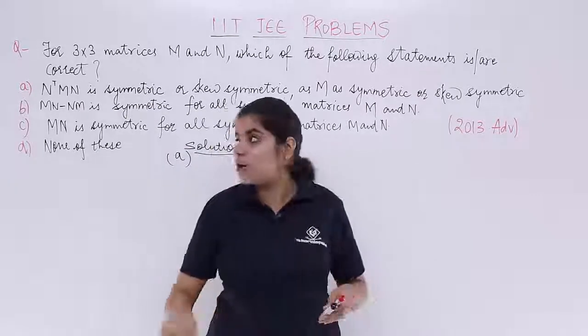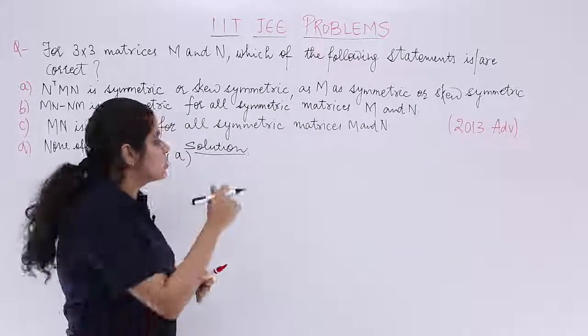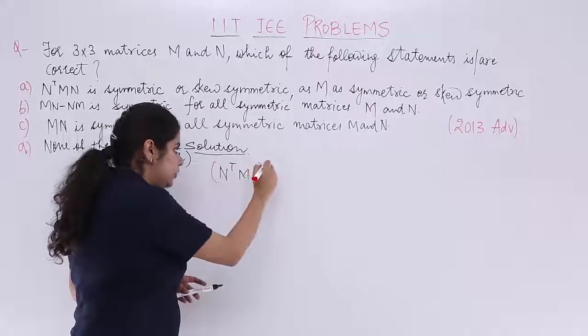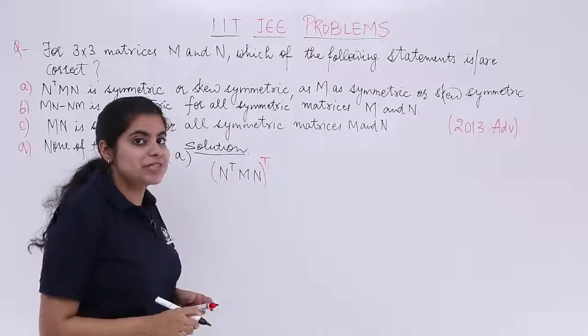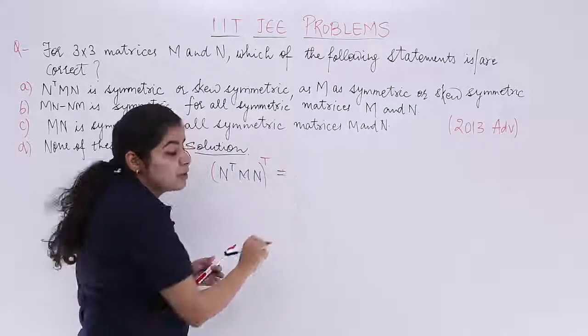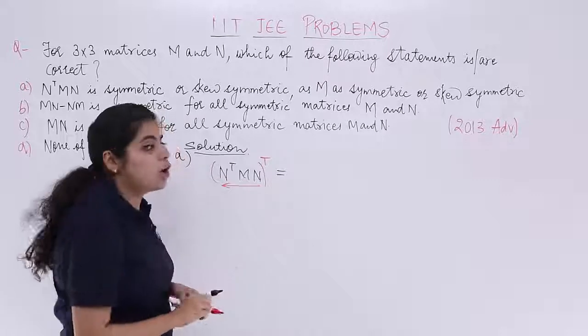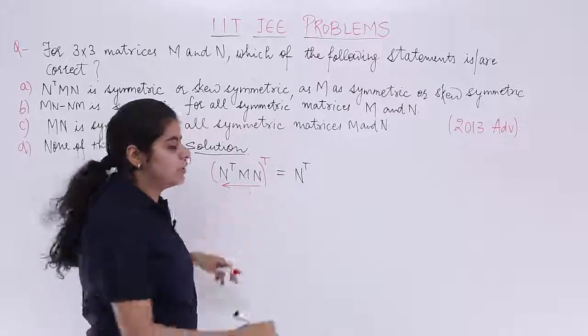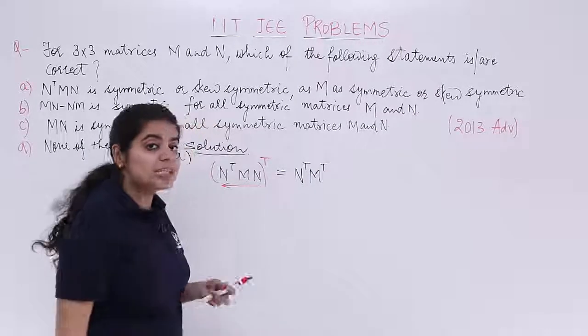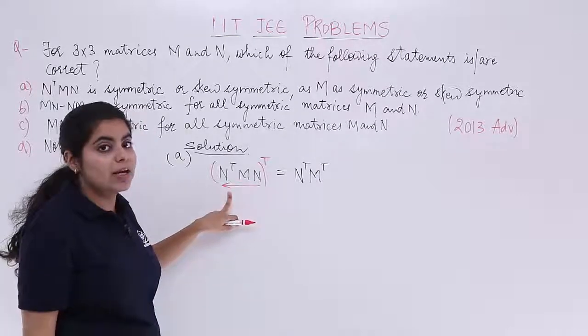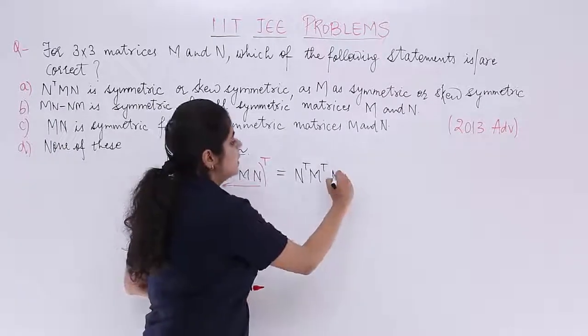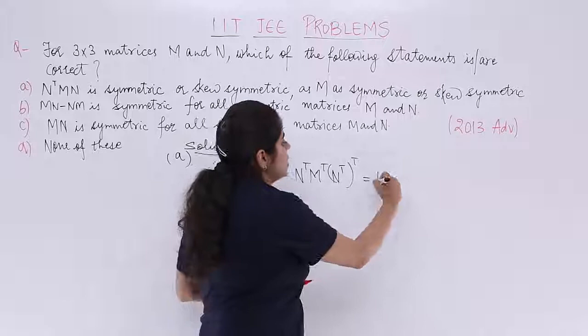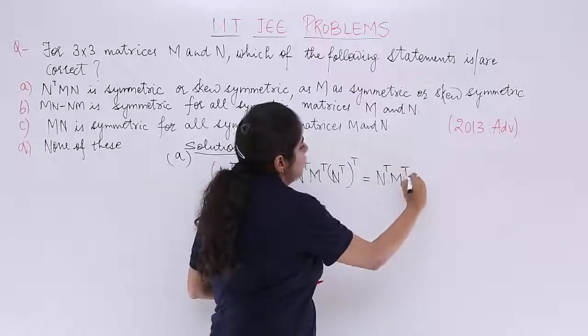Option number A consists of N transpose MN. And to check about anything, we use the concept of transpose, especially symmetricity and skew symmetricity. The reversal order of multiplication tells me that it is N transpose, then it is M transpose, and last but not the least, I have N transpose already so it becomes N transpose transpose. Two times transpose means that very matrix, that same matrix. So it is N transpose M transpose N.